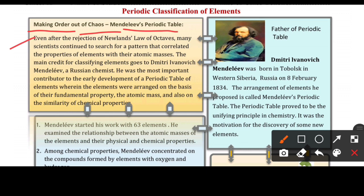Even after the rejection of Newland's Law of Octaves, many scientists continued to search for a pattern that co-related the properties of elements with their atomic masses. When Newland's Law of Octaves failed, scientists still believed that the periodic properties of elements could be arranged meaningfully.